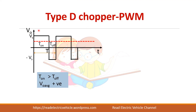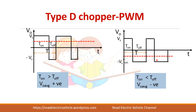The output voltage equals plus Vs during the turn-on period of the switch and minus Vs during the turn-off or diode conduction period. If T-on is greater than T-off, the average voltage is positive. If T-off is greater, the average voltage will be negative.